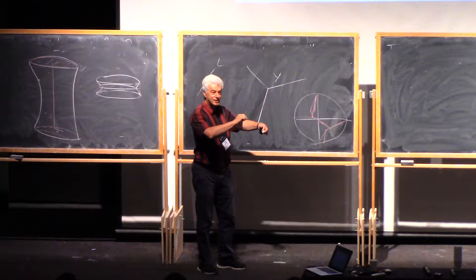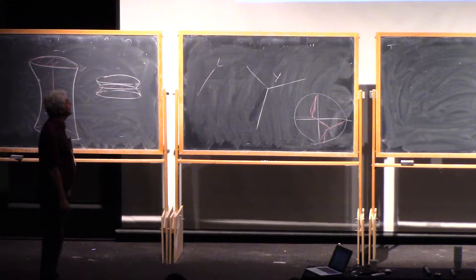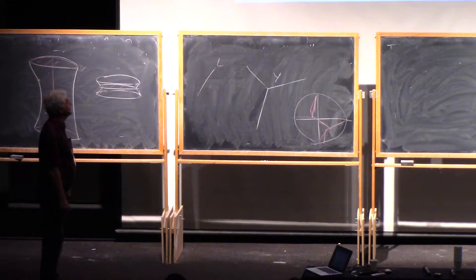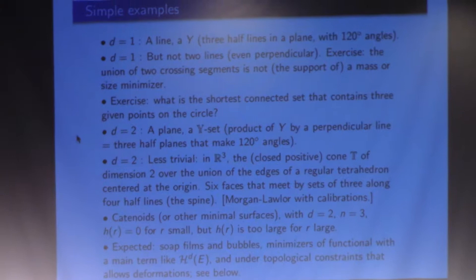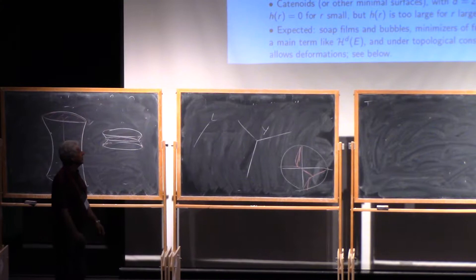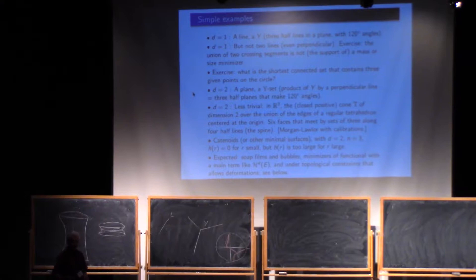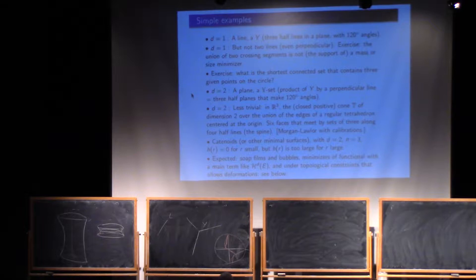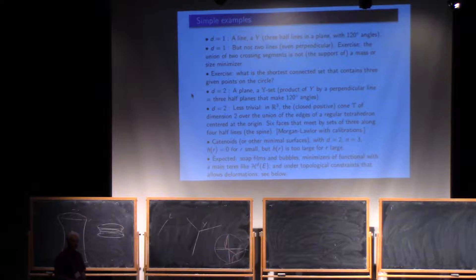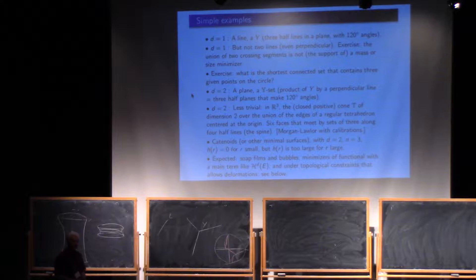So that covers one-dimensional minimal sets. For two dimensions: planes — not surprising. What I call a Y-set with a bold Y is the product of a Y-set here by a vertical line, or the union of three half-spaces. There is also a T-set — the cone over something related to tetrahedra. What I've given you is the complete list of sets for which we know they are minimal in the whole space — the list of minimal cones. Cones are important in this business.